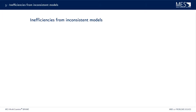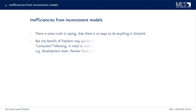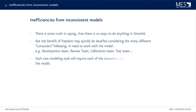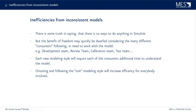Problem number three: inefficiencies that result from inconsistent models. There is probably some truth when you say that there are at least 10 ways to do anything in Simulink. There is a lot of freedom in using Simulink, but the benefits of this freedom may be dwarfed by considering the many different consumers that actually have to work with your model afterwards — the development team itself, review teams, a calibration team, a test team, and so on. Each new modeling style will require additional time to understand the model. Choosing and adhering to one modeling style will increase efficiency for everybody involved.